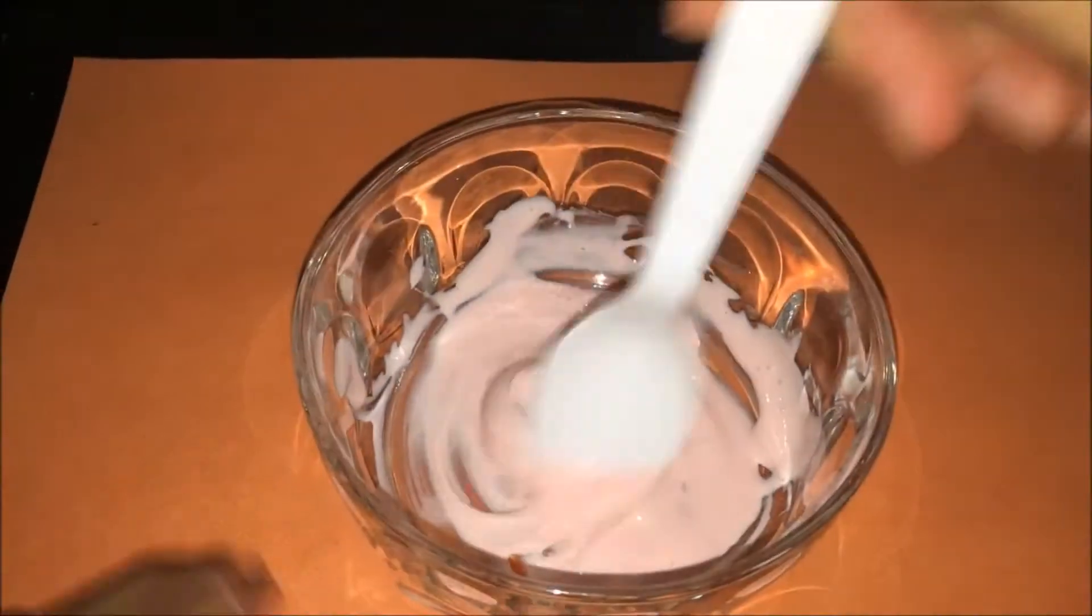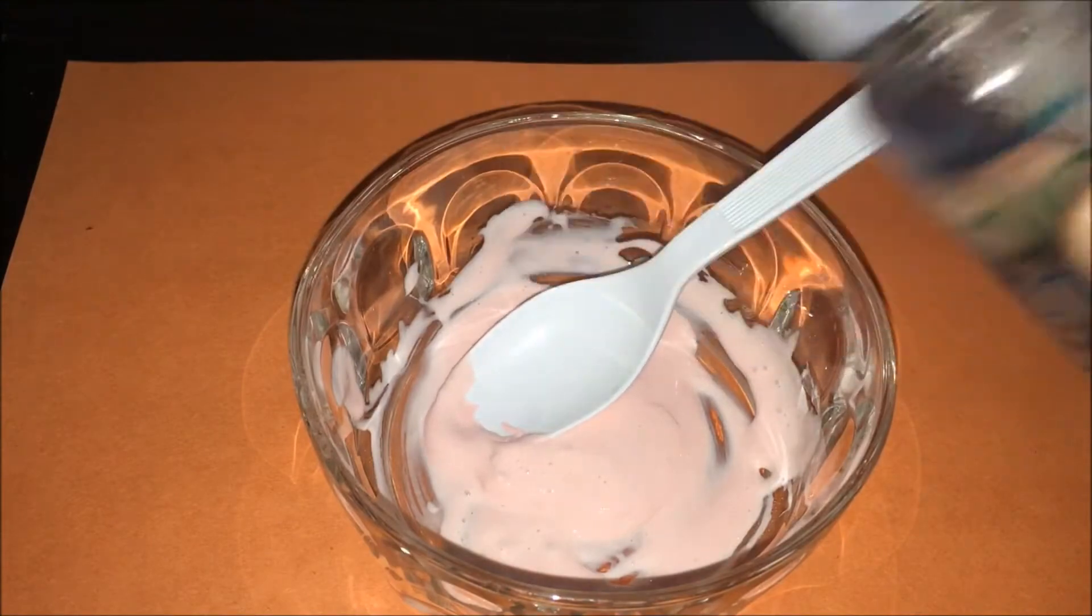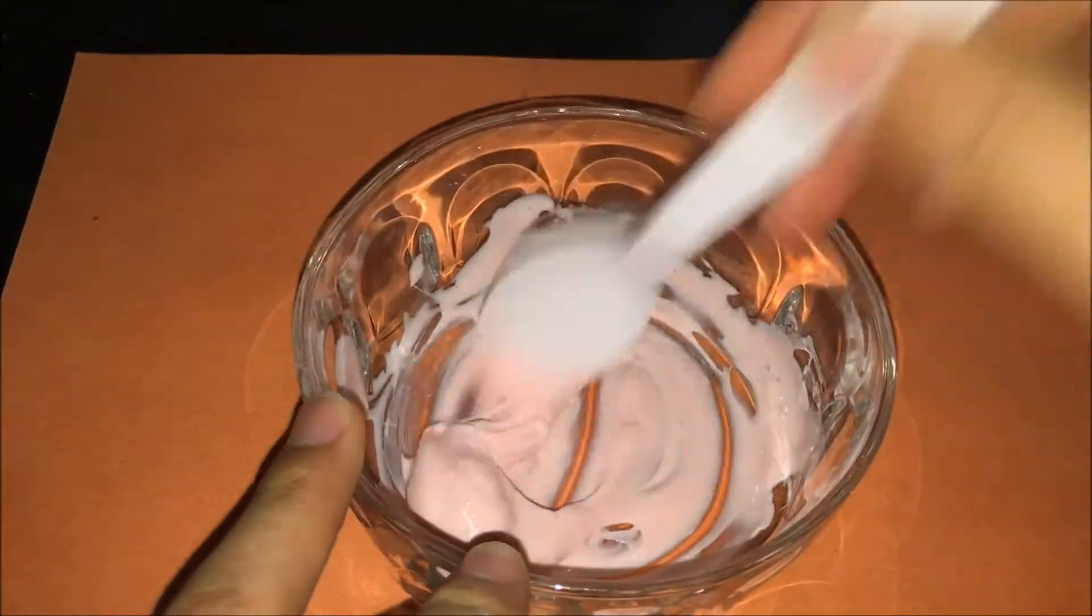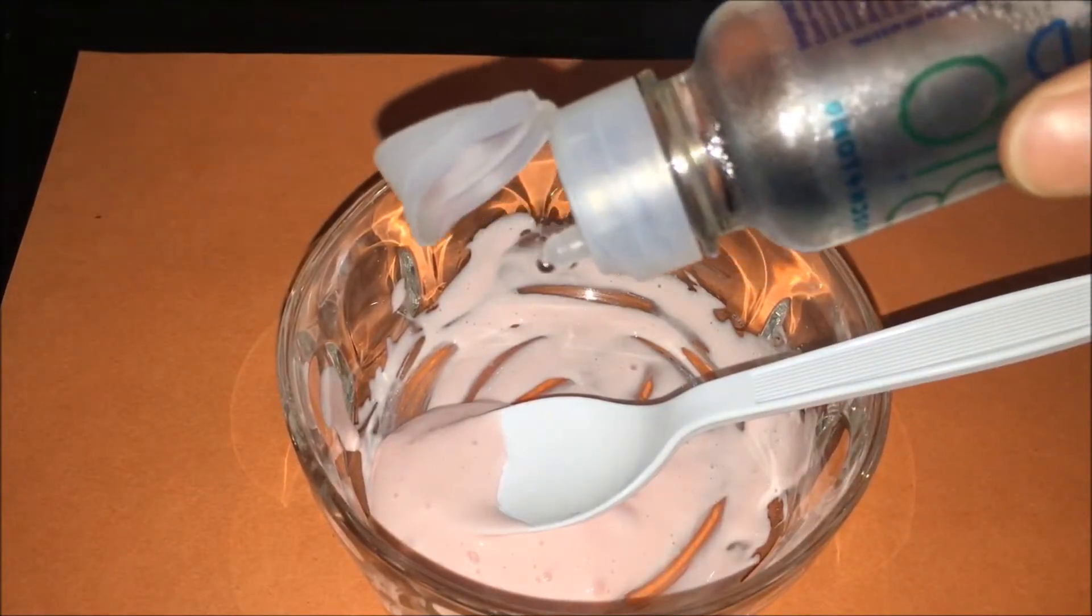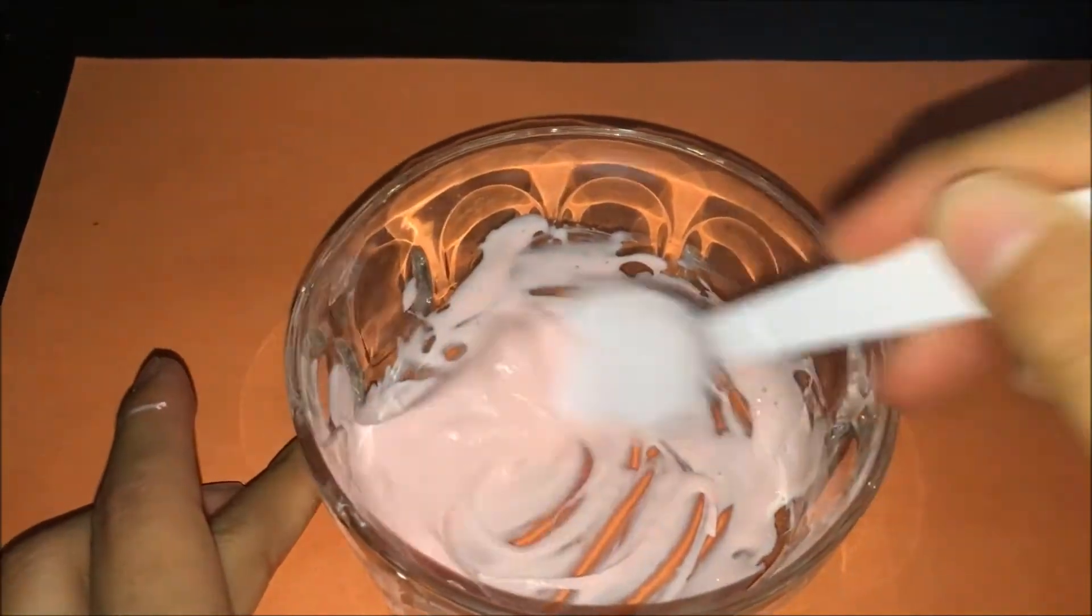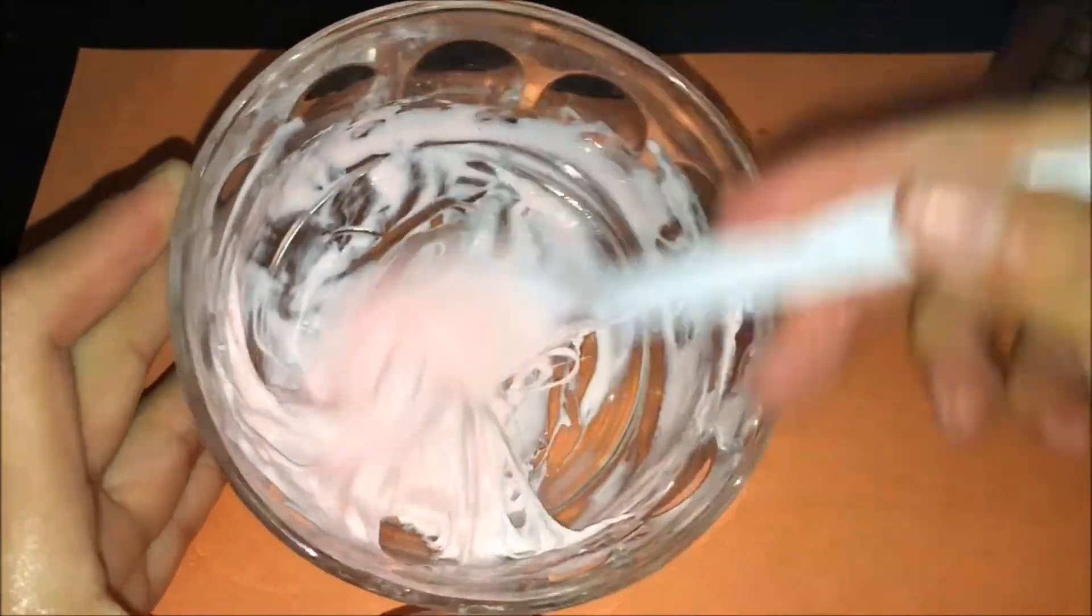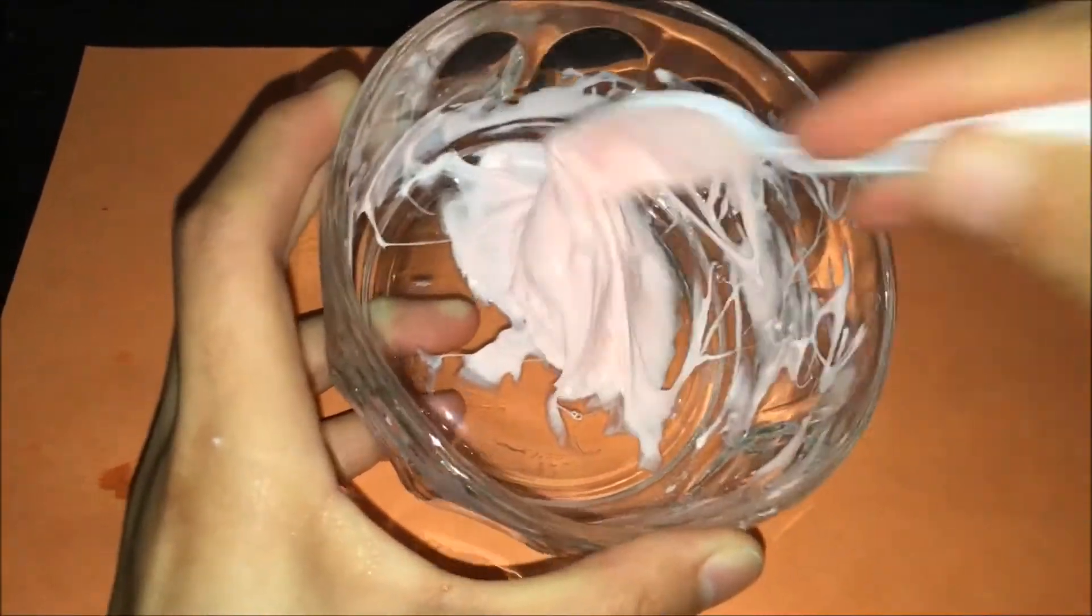Just mix all that up until you get a consistency that is sticking to the spoon. Keep adding contact solution until it's getting sticky. When you're mixing it and you're seeing that it's really sticking, just mix it up and add a little bit of baking soda, not a lot.